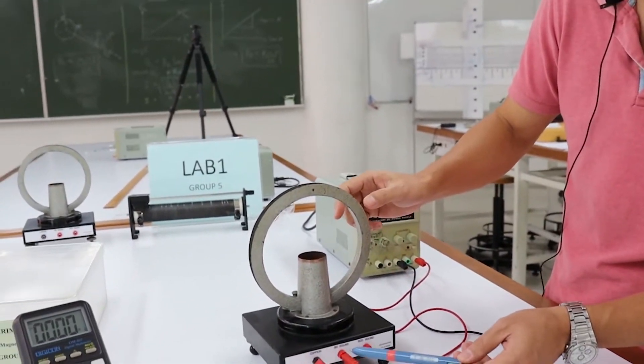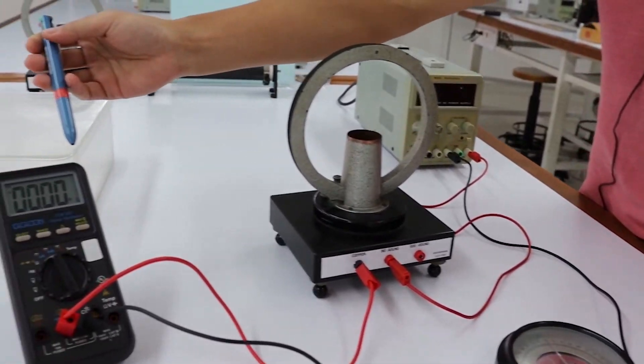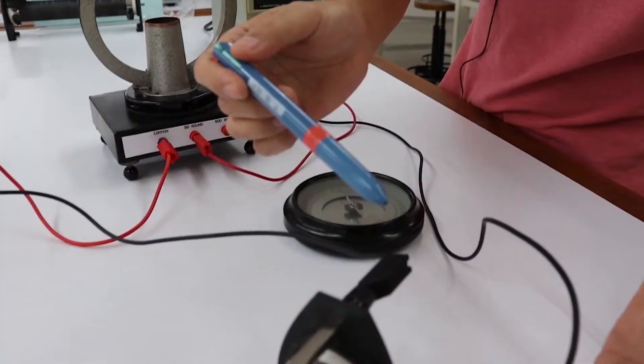Initially, a coil of 50 turns of a tangent galvanometer was connected to the DC power supply, and connected to an ammeter and a rheostat.